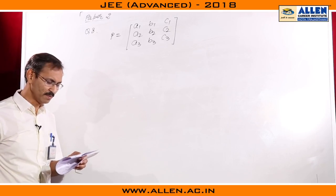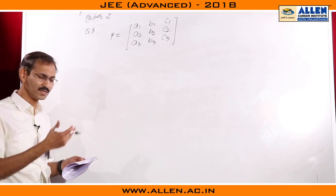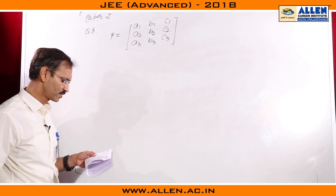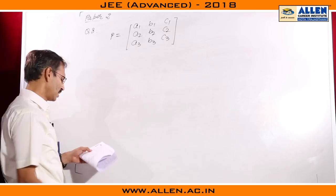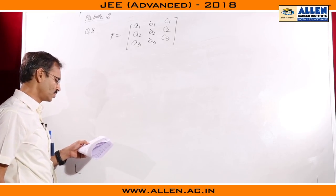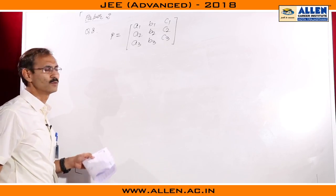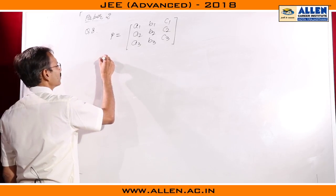Question number 8. Let P be a matrix of order 3 by 3. We consider a general matrix where all these entries are minus 1, 0 or 1. All these 9 numbers are either minus 1, 0 or 1. We have to find out the maximum possible value of its determinant.